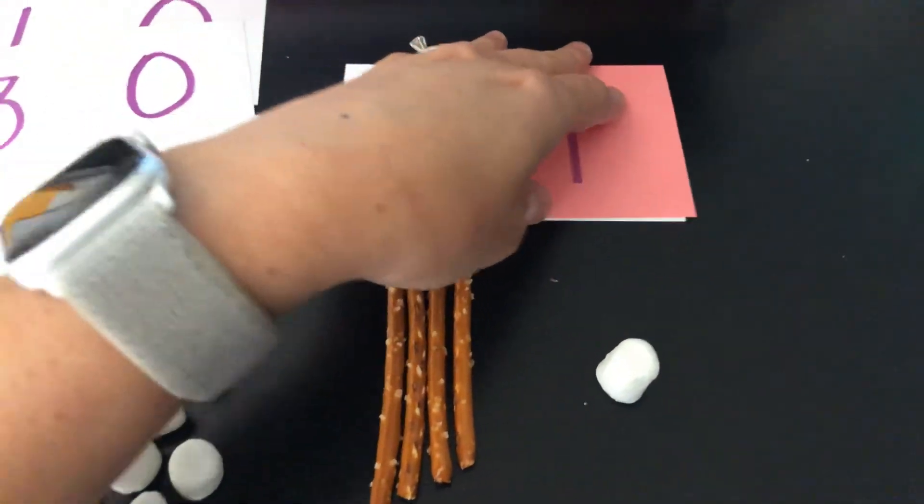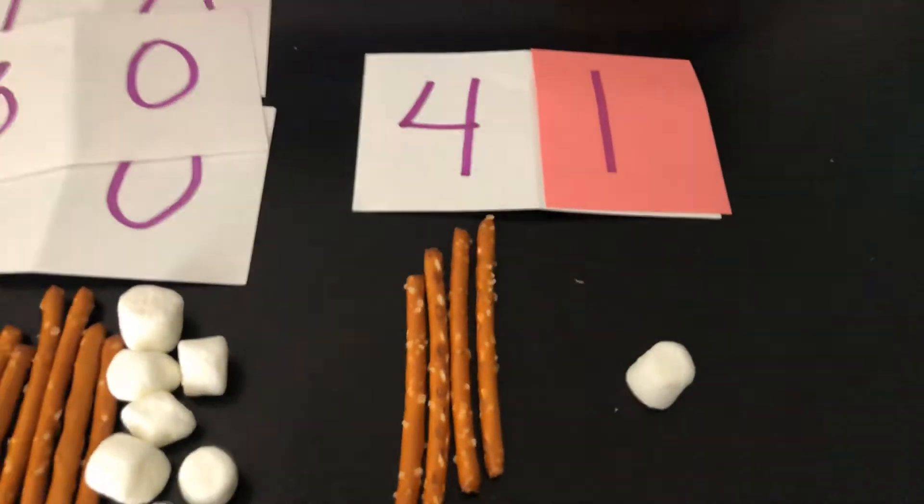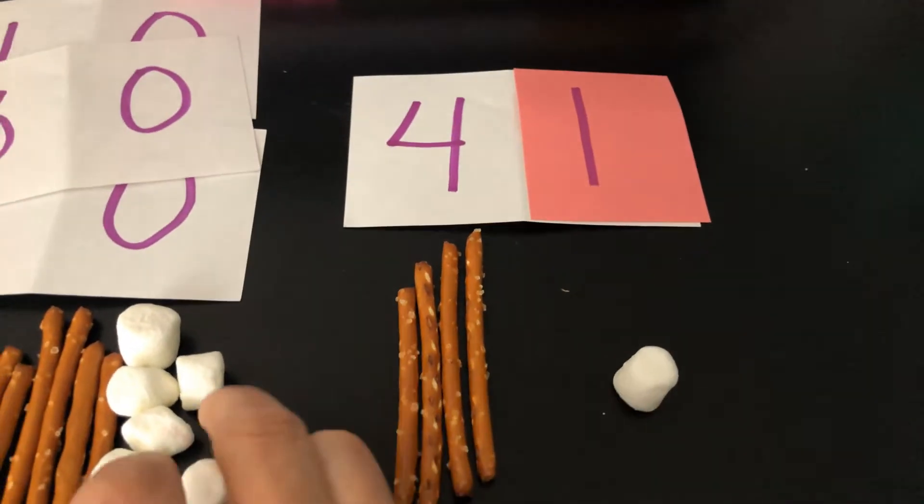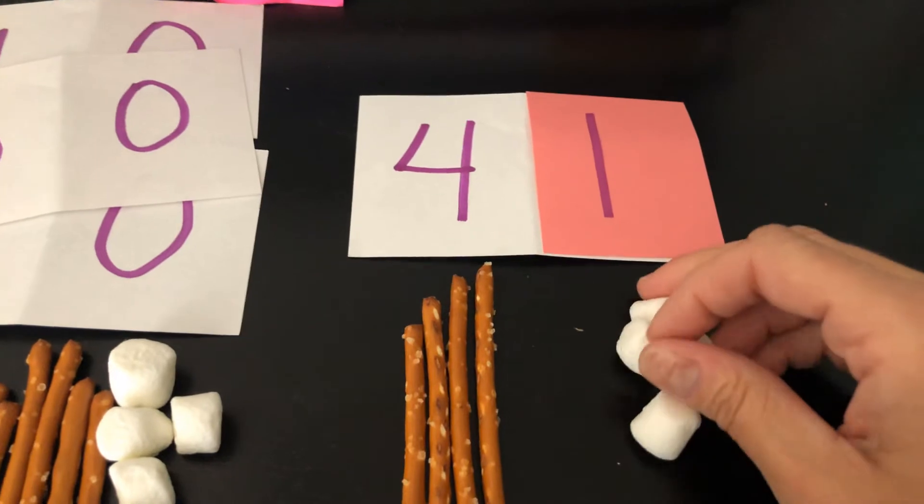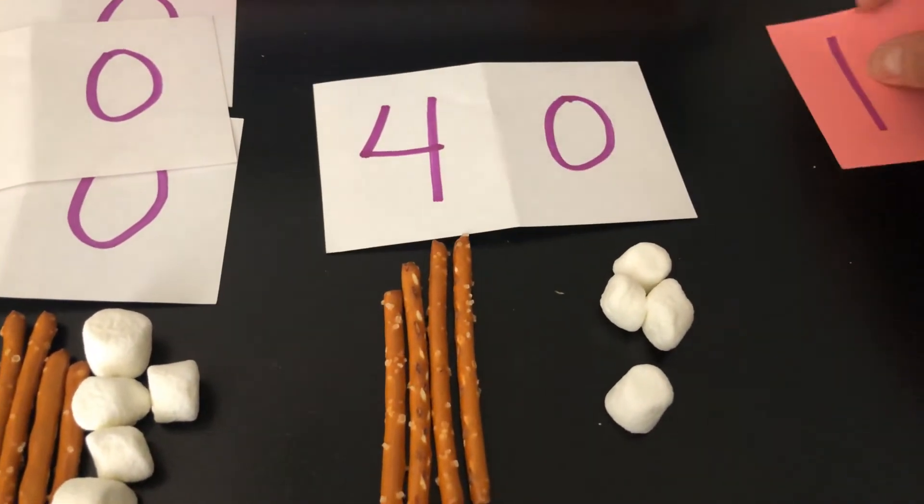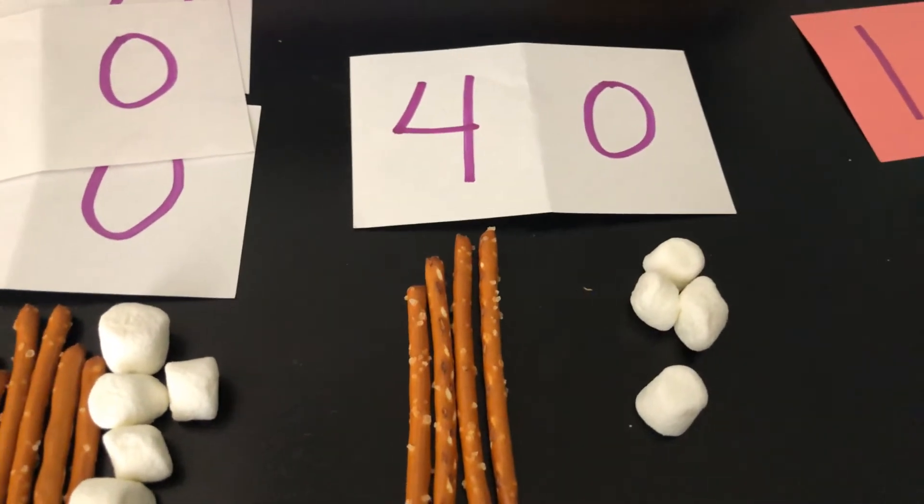Or, if I want to get harder, I could start adding and subtracting ones. So, 41 plus 3, I could take my little 3s. 41 plus 3, all I'm doing is changing my ones. So, I still have 4 tens.